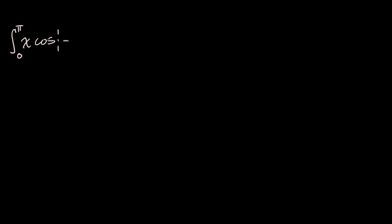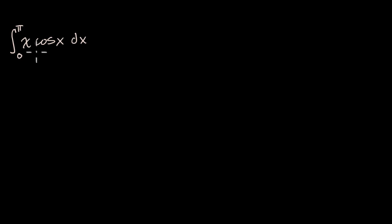What we're going to do in this video is try to evaluate the definite integral from zero to pi of x cosine of x dx. Like always, pause this video and see if you can evaluate it yourself. When you immediately look at this, it's not obvious how you just straight up take the anti-derivative here and then evaluate that at pi, and then subtract from that it evaluated at zero.